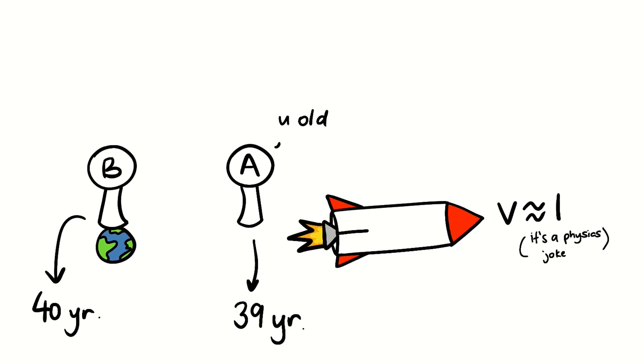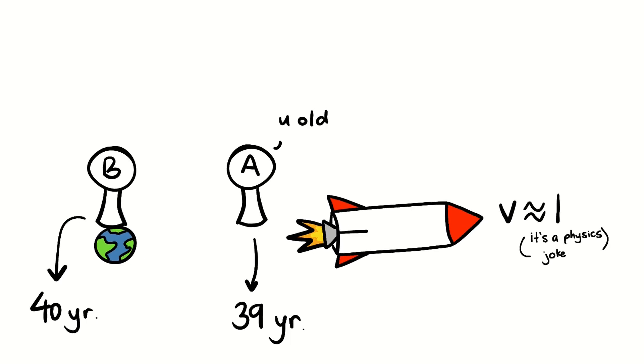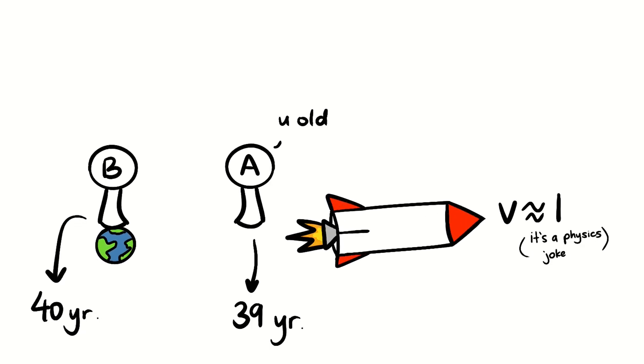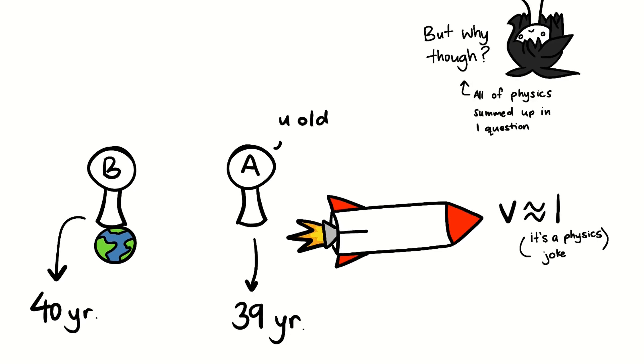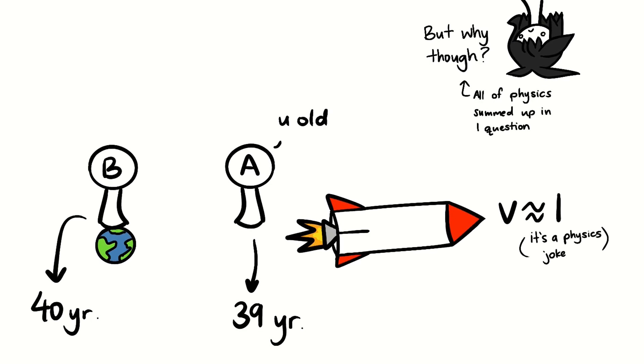Of course, this isn't actually a paradox, because we have the math and physics that can perfectly predict and calculate the exact age difference, but it's paradoxical in the sense that it doesn't make sense. Anyways, we can use this concept to help us in our speedrun.